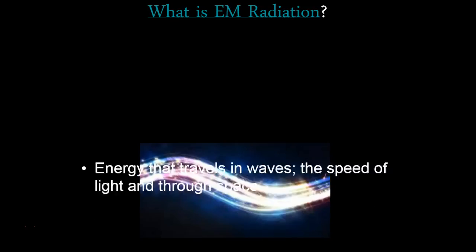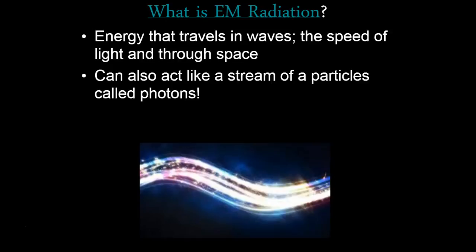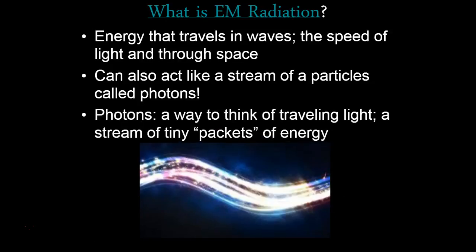Before we talk about that, you have to understand what light is, or what electromagnetic radiation is more specifically. Electromagnetic radiation travels in waves. There are a lot of different kinds of it. It's what's called a non-mechanical wave, which means it doesn't need a medium and it can travel through space. Inside these electromagnetic waves, we have particles called photons.